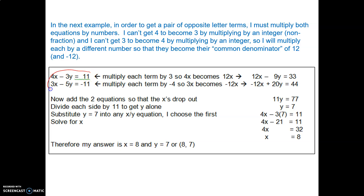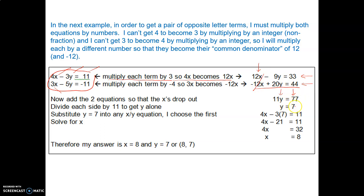Here are the two equations. We decided to get the x's to be opposites of each other. Multiplying each term in the first equation by 3 makes the 4x become 12x, giving 12x minus 9y equals 33. Then multiplying the second equation by negative 4 gives negative 12x plus 20y equals 44. Now that we have opposite x's, we add the two equations together — the x's drop out, giving 11y equals 77. Dividing to get y alone, y equals 7.